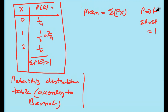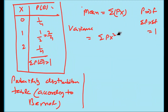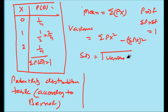For variance, the formula is sigma px² minus (sigma px) whole squared, since sigma p equals 1 (just as sigma f equals 1 in frequency distribution). Standard deviation is the square root of variance. You can understand these formulas by substituting p in place of f, and sigma p in place of sigma f, which equals 1.